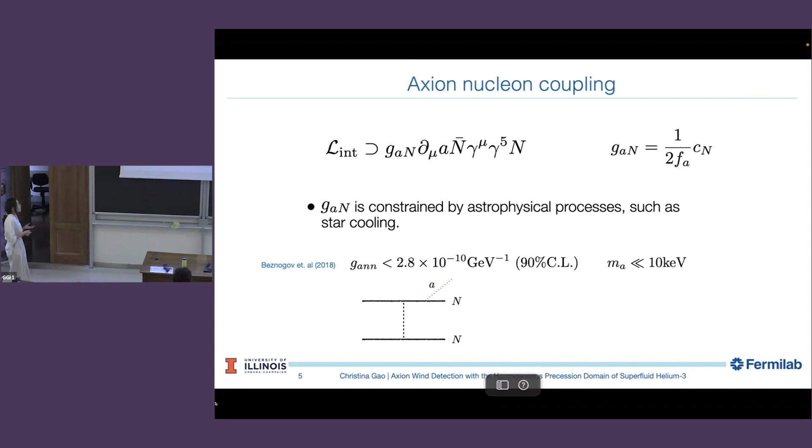Because in stars, if you have a large background density, you can branch on axions, and that will make the star cool faster than it should be. For example, in this paper, they look at photon flux of a particular neutron star, and were able to place a 10 to the minus 10 inverse GeV constraint on the axion-neutron coupling for axion mass all the way down from 10 keV. So this is a very powerful probe.